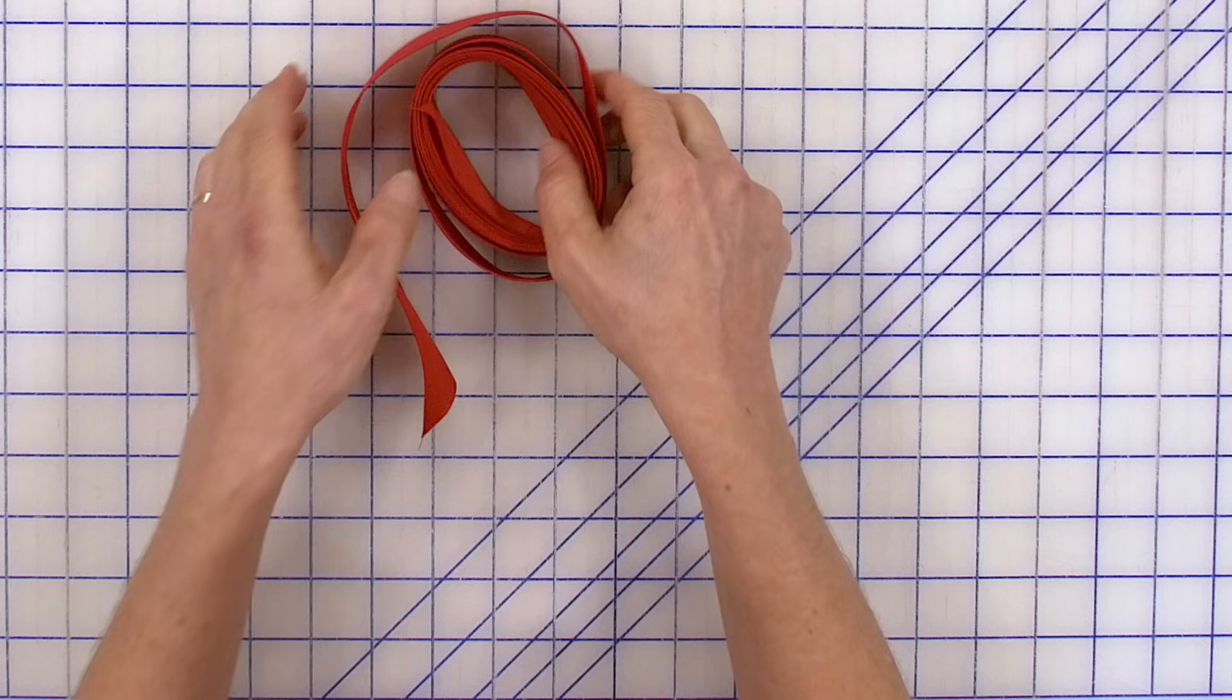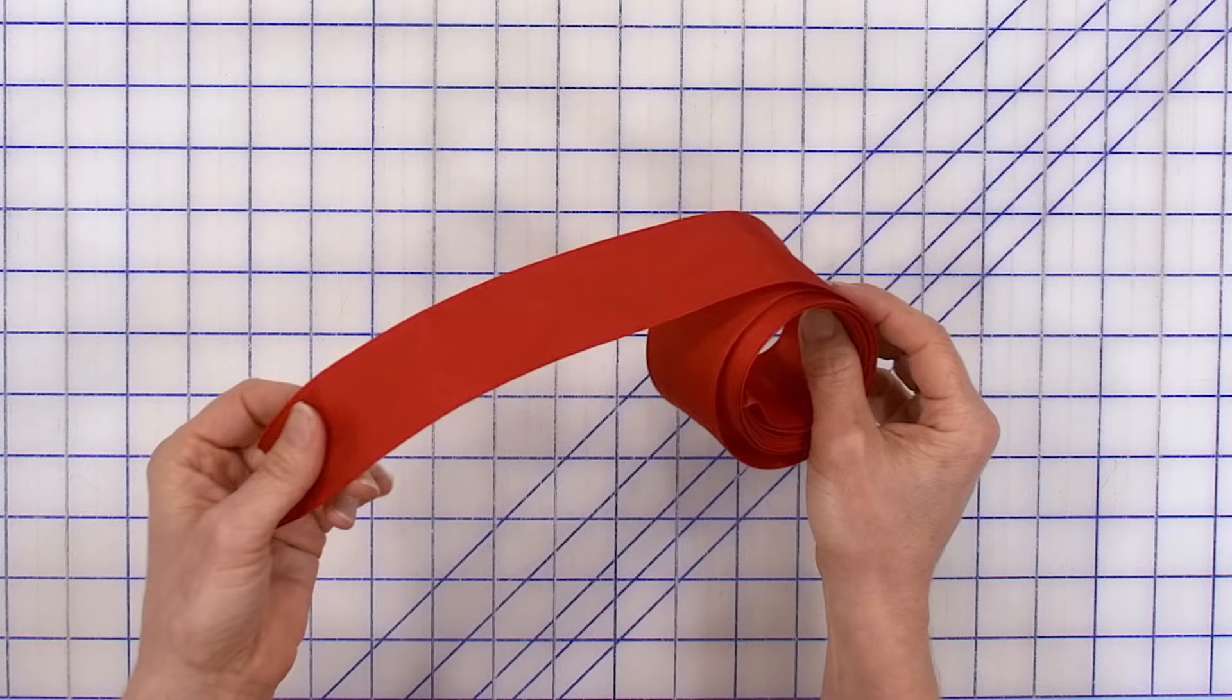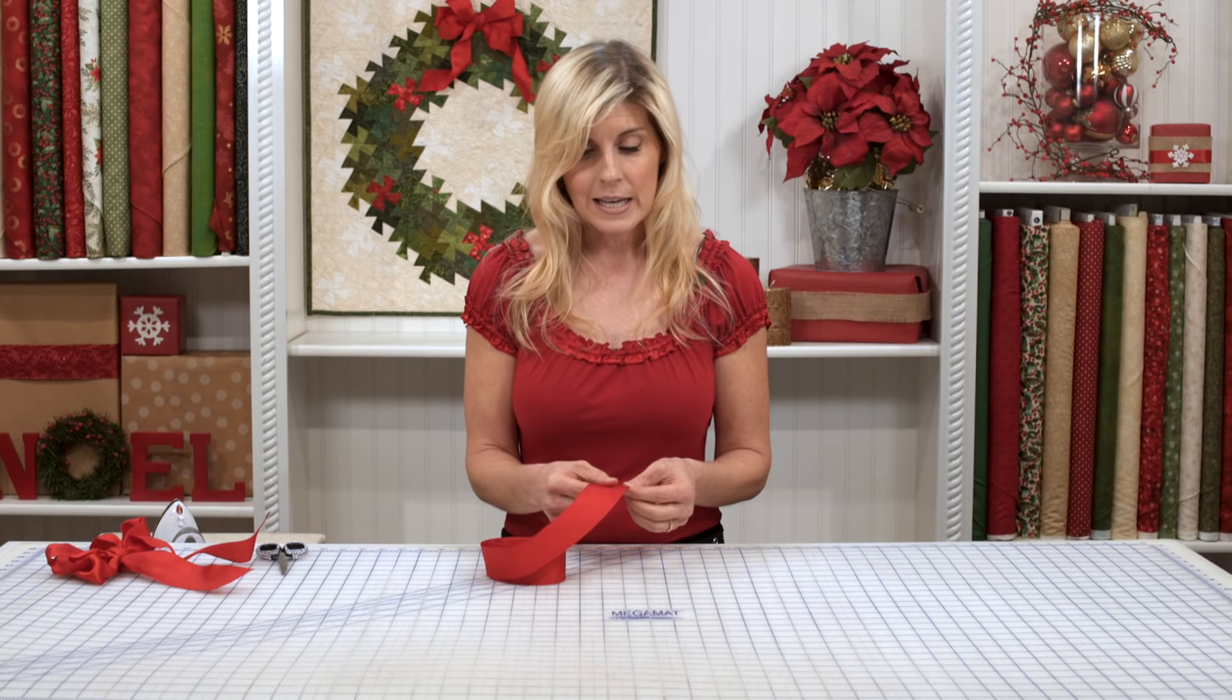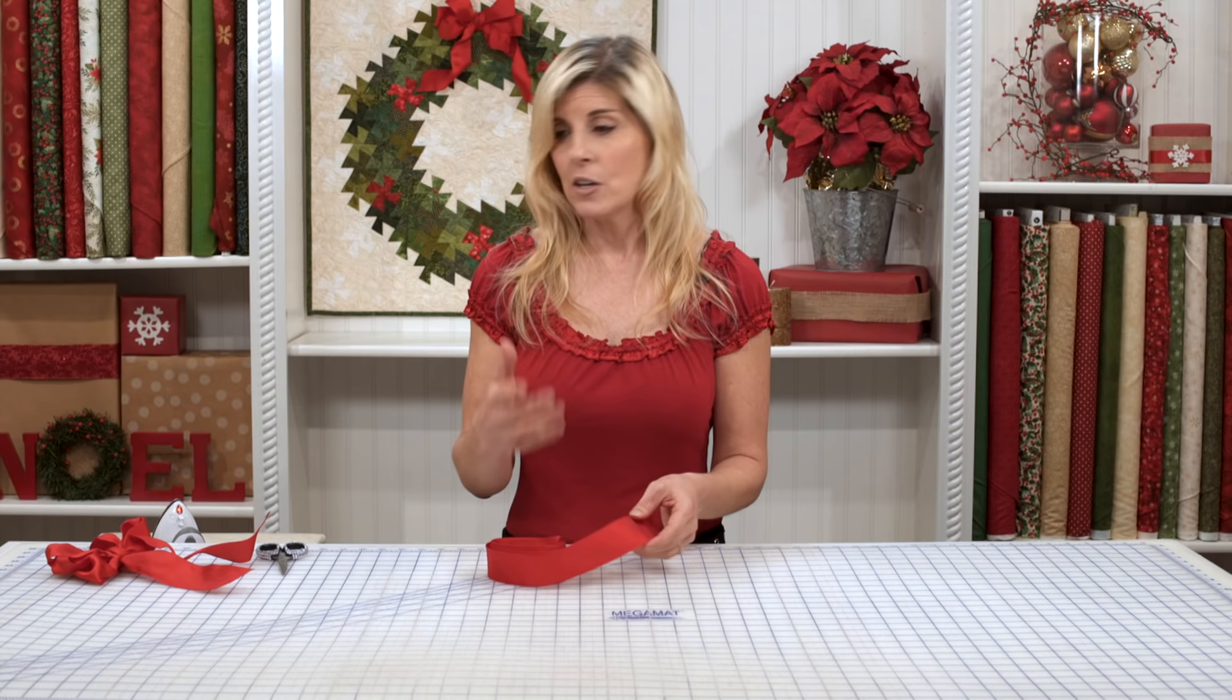As in anything, starting with good ingredients usually results in great results. So I'm starting with a one and a half inch ribbon that is double-sided, meaning there's really no right or wrong side. It looks the same from both sides and there's a wire in the edge of the ribbon on both sides. So it's going to hold this beautiful shape.